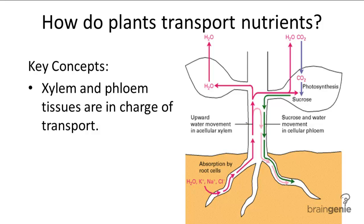Food, nutrients, and water are circulated through plants by the vascular tissues xylem and phloem. The xylem carries water and dissolved minerals up from the roots, as shown in this pink arrow pathway, and the phloem carries sugar produced by photosynthesis down from the leaves, as shown in this green arrow pathway.